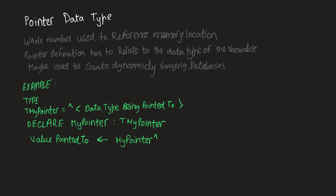The data type over here is T-my-pointer, which has to be given, in this specific syntax, the data type of the memory location — what kind of data exists at the memory location: is it a string value, a real value, or a boolean value? That is what is supposed to be mentioned here. Then we are declaring a variable called my-pointer, which is of the data type T-my-pointer — a user-defined data type we just created. The other variable, value-pointed-to, is given the same value as my-pointer. My-pointer will have the value of whatever is at the memory location, for example memory location 8132, and that same value will be fed to the variable value-pointed-to.